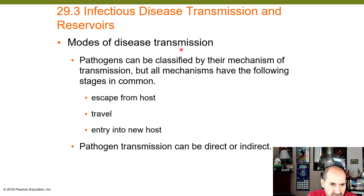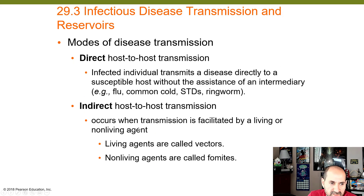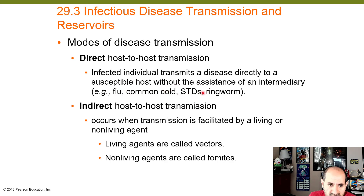What are some modes of disease transmission? Pathogens can be classified by their mechanism of transmission, but all mechanisms share the same stages: escape from the host, travel, and enter a new host. Transmission can be direct or indirect. Direct means host-to-host: the infected individual transmits the disease directly without an intermediary — for example, the flu, common cold, STDs, or ringworm via skin-to-skin contact.